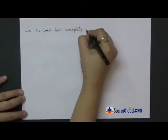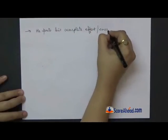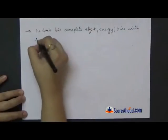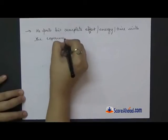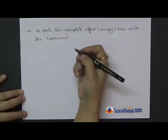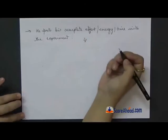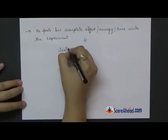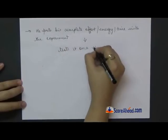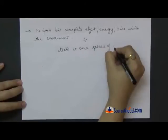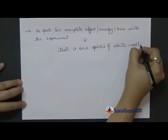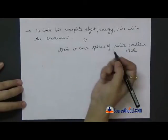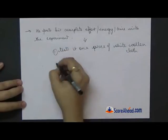He says that his experiment was theoretically a success, but he had to test it. So he tests it on a piece of white woolen cloth, he says, and it disappears. So the first test is successful.